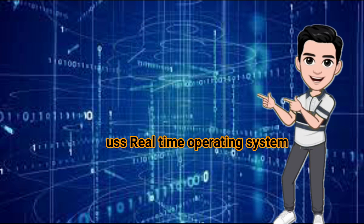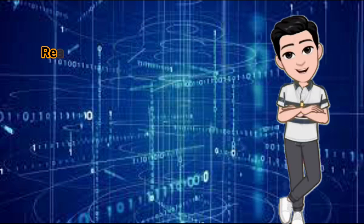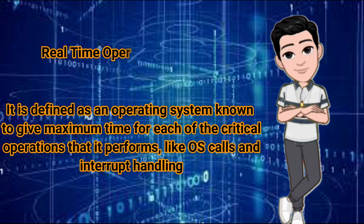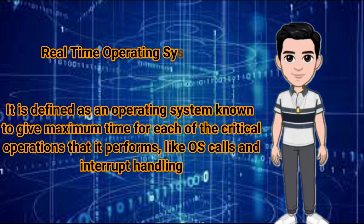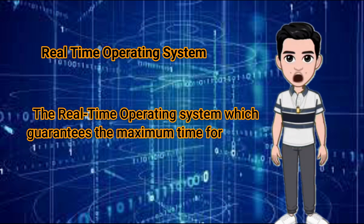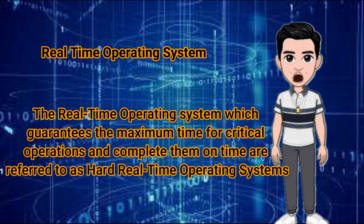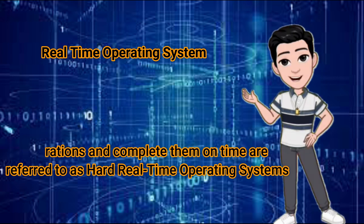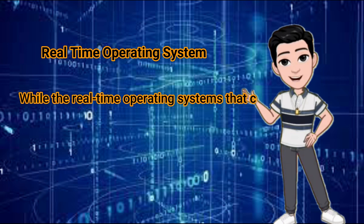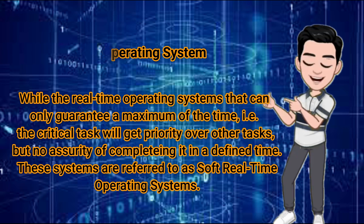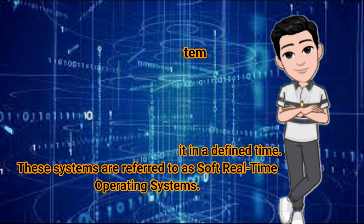Now we will discuss real-time operating systems. A real-time operating system is defined as an operating system known to give maximum time for each of the critical operations it performs, like OS calls and interrupt handling. A real-time operating system that guarantees the maximum time for critical operations and completes them on time is referred to as a hard real-time operating system. Real-time operating systems that can only guarantee a maximum time — meaning the critical task will get priority over other tasks but with no assurance of completing on time — are referred to as soft real-time operating systems.